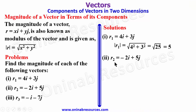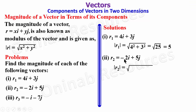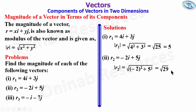For r2, we have r2 = -2i + 5j. The magnitude of r2 is √((-2)² + 5²) = √(4 + 25) = √29. That's all for the magnitude of r2.